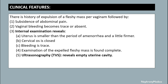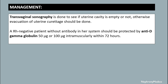Internal examination reveals that the uterus is smaller than the period of amenorrhea and the cervical OS is closed. Examination of the expelled fleshy mass is found to be complete. Ultrasonography reveals an empty uterine cavity.